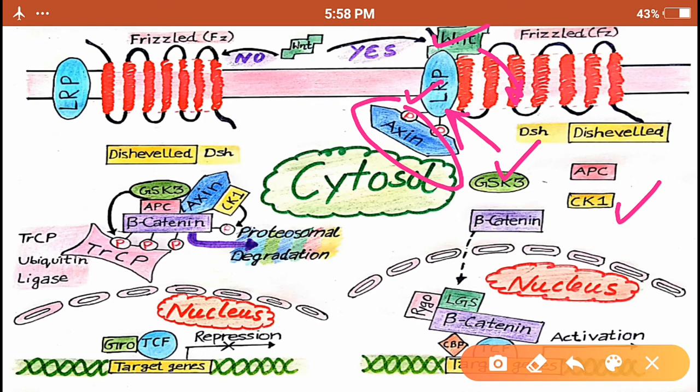So what is happening here? Exine was initially here. The ligand binding results in the phosphorylation of this LRP receptor by these enzymes. The exine comes from here and binds to these phosphorylated sites. So what just happened?